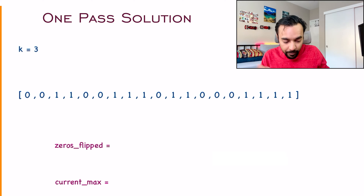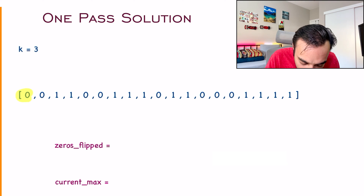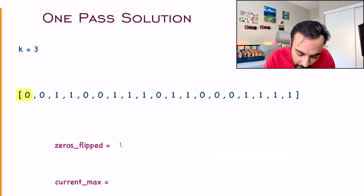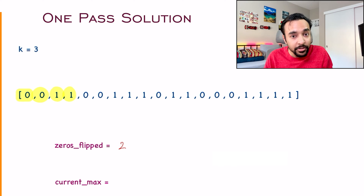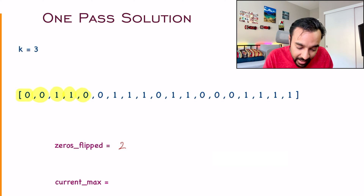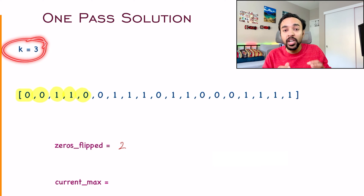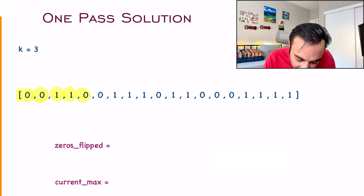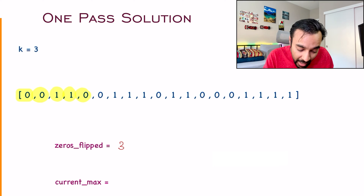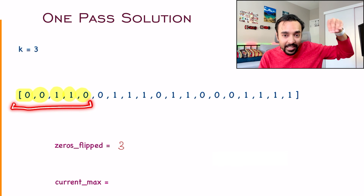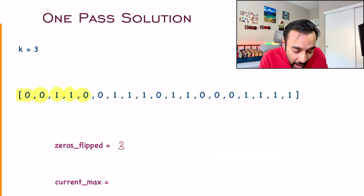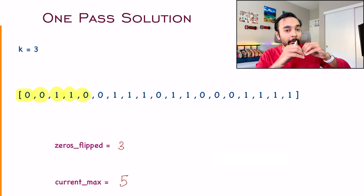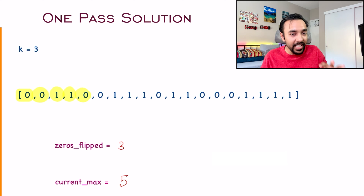As you start to traverse the array, you see a zero — you can flip it because k is 3, so zeros flipped becomes 1. Move ahead, you get another zero — you can flip this too, zeros flipped becomes 2. You see ones — that is good. Then you see another zero — can you flip it? Yes, because you have only flipped 2 zeros and you are allowed to flip 3. So zeros flipped becomes 3. This window is telling you the maximum consecutive ones you can find by flipping at most 3 zeros — so far, 5 consecutive ones.